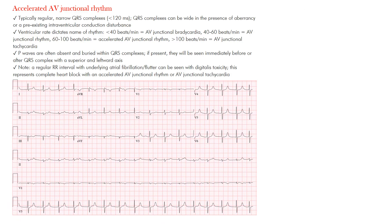Accelerated AV junctional rhythm is a typical regular narrow QRS complex rhythm, just like we saw with all our other junctional rhythms. What really differentiates these junctional rhythms from one another is the rate — specifically the ventricular rate.